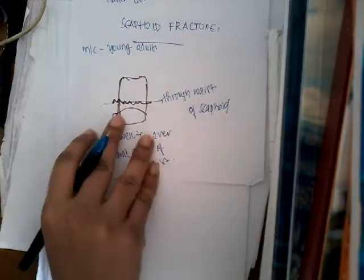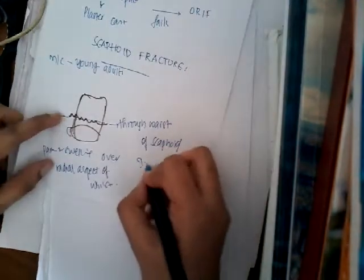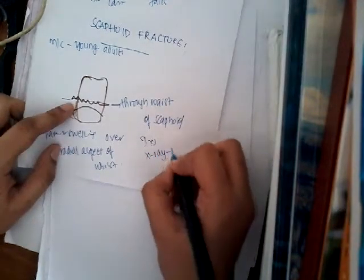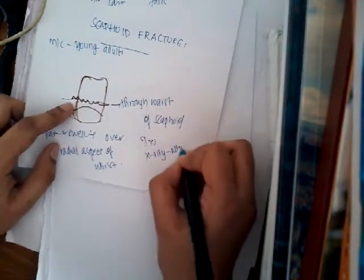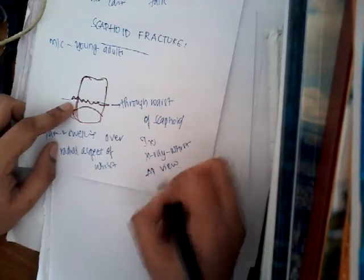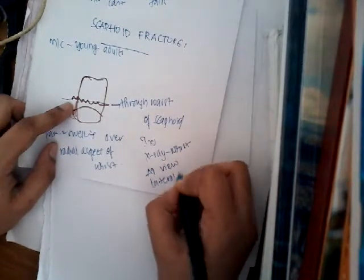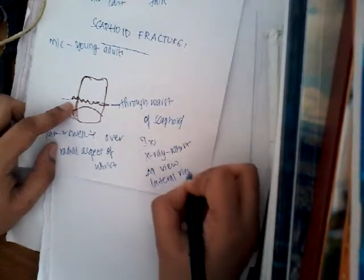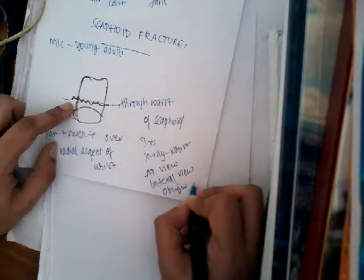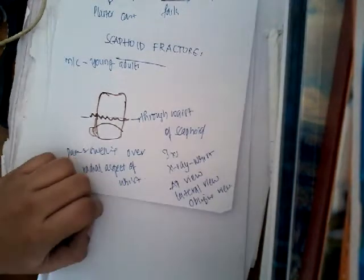You will have to do X-ray investigations. The best investigation is an X-ray of the wrist where you do an anterior-posterior view, lateral view, and also oblique view — all three views.